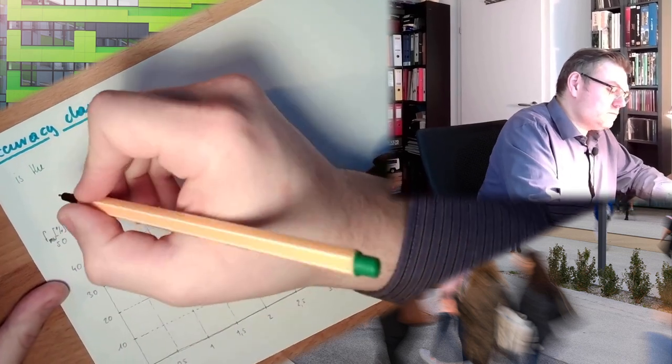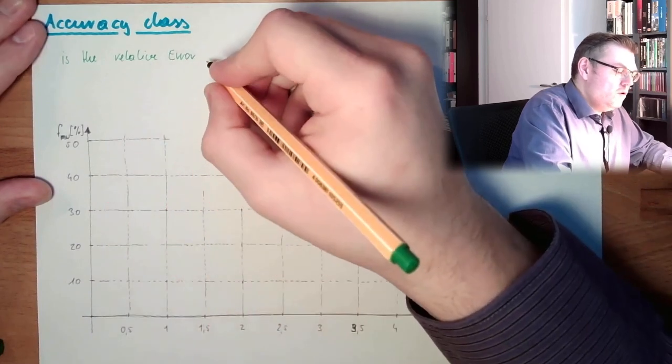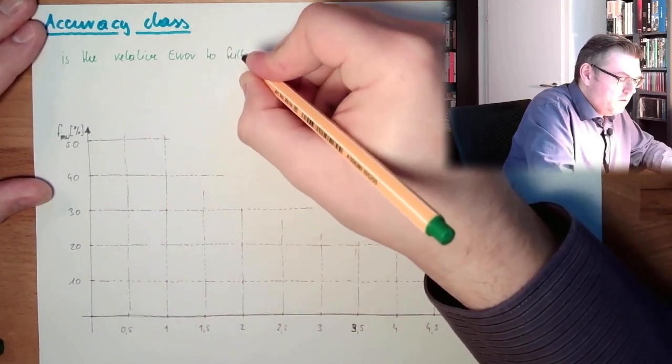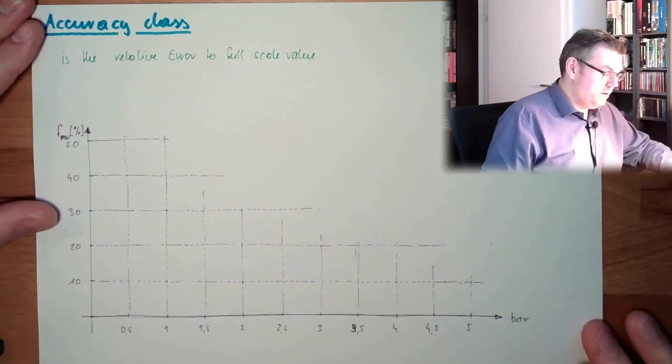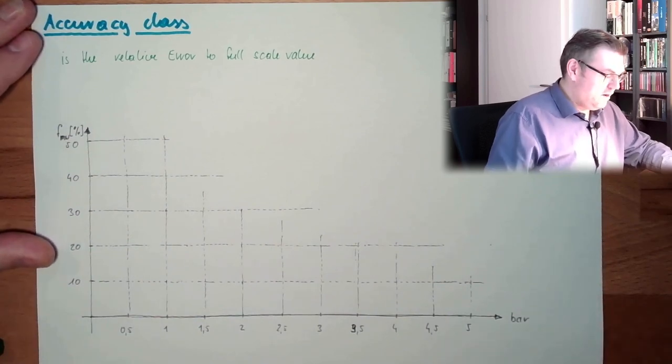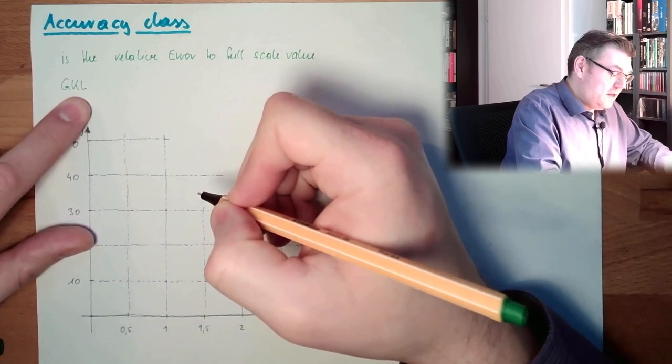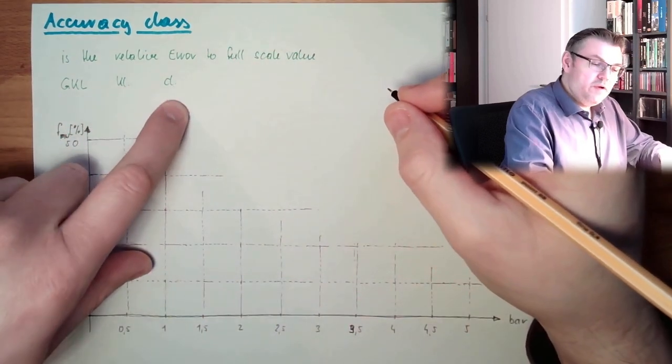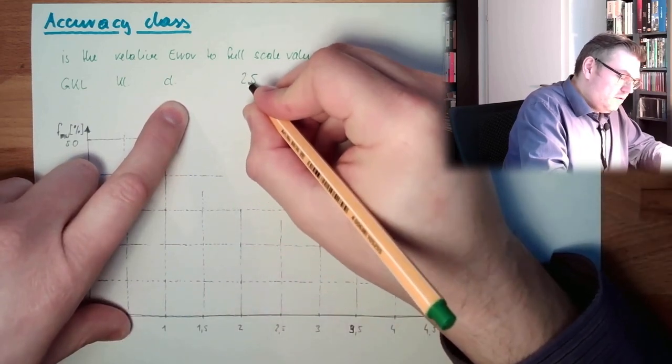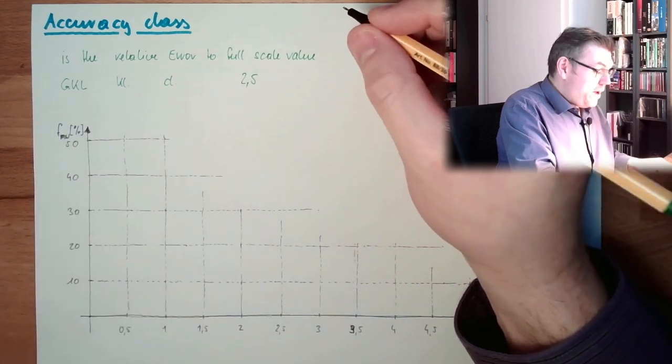So the accuracy class is the relative error to the full-scale value. If we have a class instrument - this is the German abbreviation, Genauigkeitsklasse, it's sometimes labeled like that, or sometimes it's just written class in German or English. If we have, for instance, 2.5, then this would mean we make an error of 2.5% compared to the full-scale value.